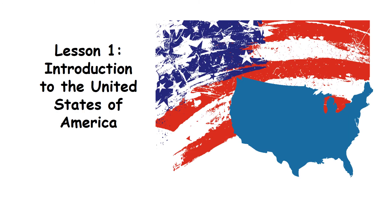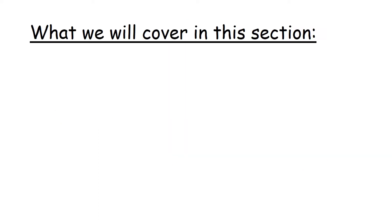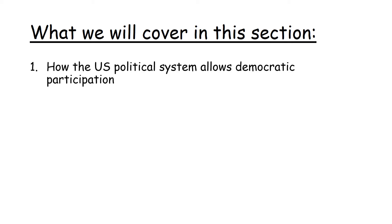So this is the USA topic that we're starting. This first lesson is just an introduction to the United States of America. Now what we'll be covering in this topic: the first part, which you'll mostly cover online, is how the US political system allows democratic participation — basically, how do people in the USA participate in politics? What is the process? Do they get to vote? Do they get to protest? What is their participation like?